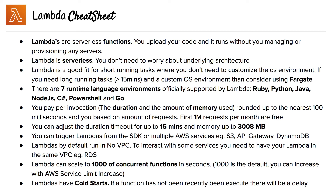Lambdas can scale to 1000 concurrent functions per second — 1000 is the default. If you want to increase this, you have to make an AWS service limit increase request with AWS support. Lambdas also have cold starts: if a function has not been recently executed, there will be a delay.